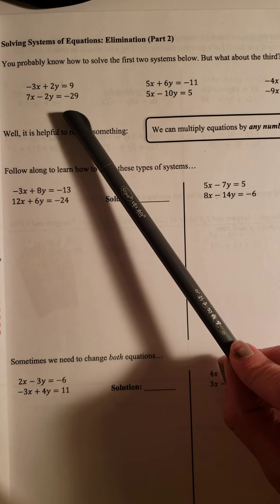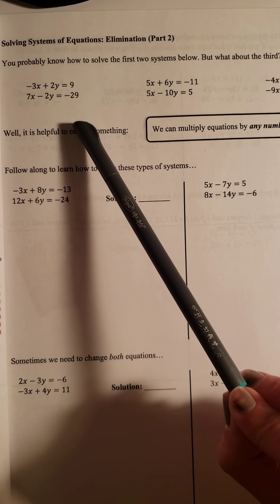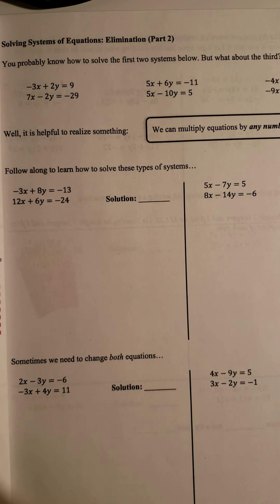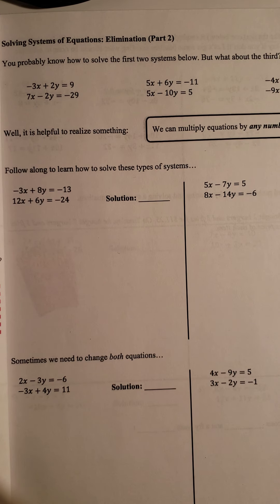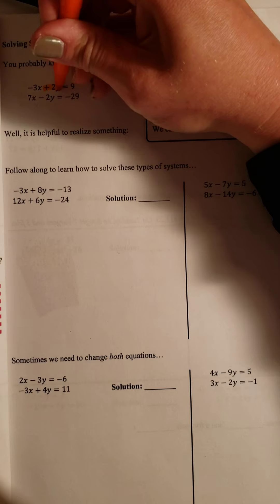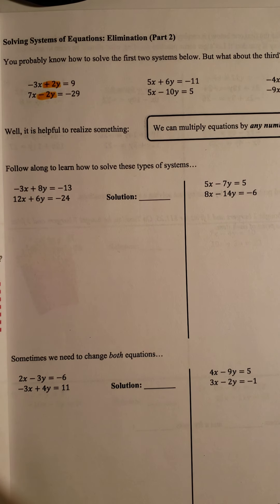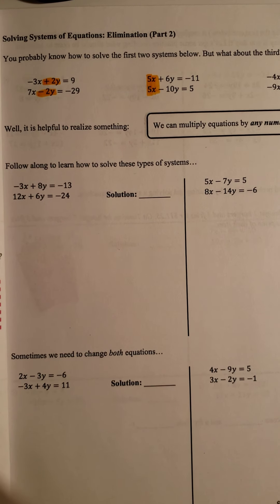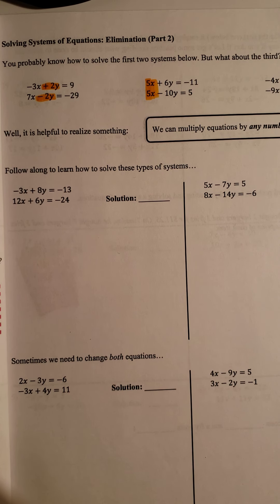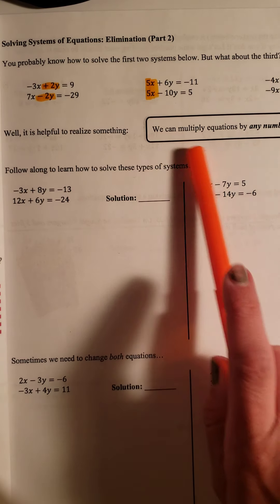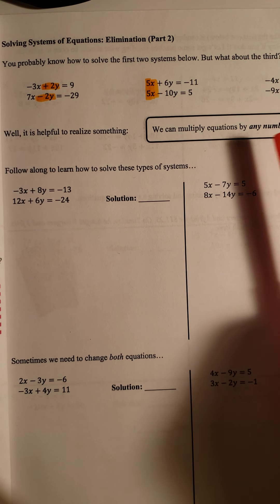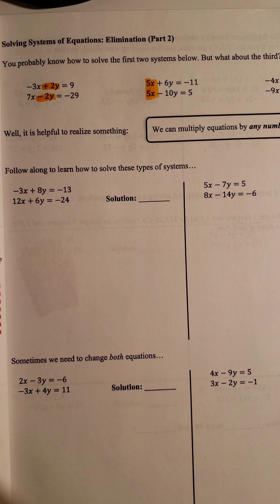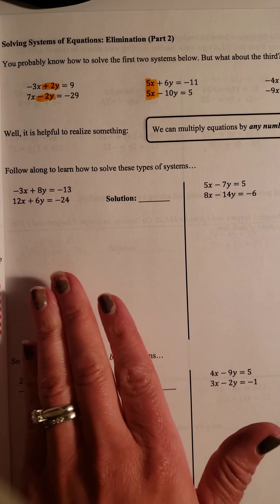Remember last week when we started, we were working with two equations that had matching but opposite coefficients. In that first equation, the twos were our matching opposites - one's positive, one's negative, but they're both twos. In the second one, we have matching, but they're not opposites, so we have to multiply through by a negative. But in the third problem, we don't have any matching or any opposites, actually. The cool thing is that you can multiply equations by any number we'd like.